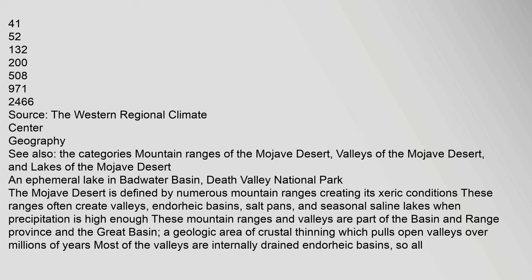The Mojave Desert's geography includes numerous mountain ranges, valleys, and lakes. There is an ephemeral lake in Badwater Basin, Death Valley National Park. The Mojave Desert is defined by numerous mountain ranges creating its xeric conditions. These ranges often create valleys, endorheic basins, salt pans, and seasonal saline lakes. When precipitation is high enough, these mountain ranges and valleys are part of the Basin and Range Province and the Great Basin, a geologic area of crustal thinning which pulls open valleys over millions of years.